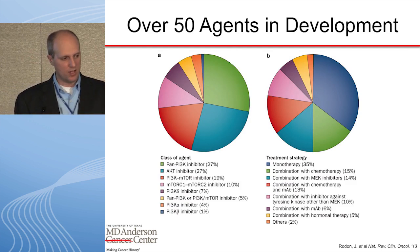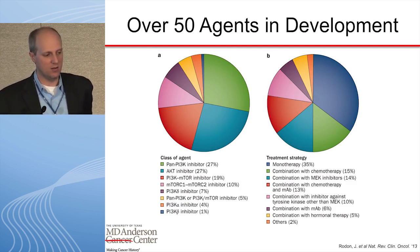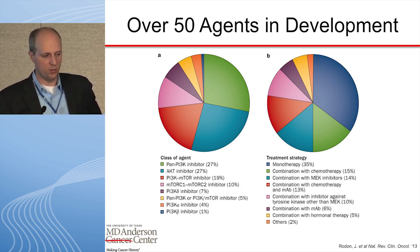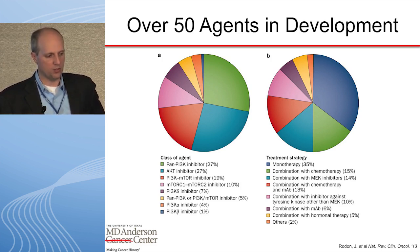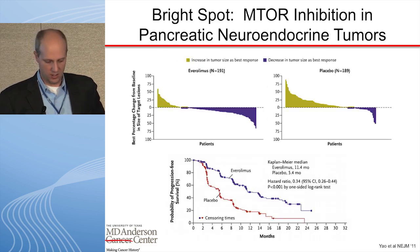A variety of inhibitors have been developed targeting these various points. We should think about this primarily as PI3 kinase inhibitors, but there are also AKT inhibitors and slightly downstream mTOR inhibitors. These all come in a variety of flavors with different specificity for different isoforms or genes in the family. There are over 50 agents in development across various classes, and treatment strategies include both monotherapy and increasingly combinations with various agents.